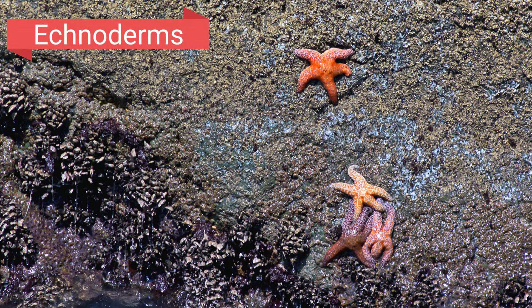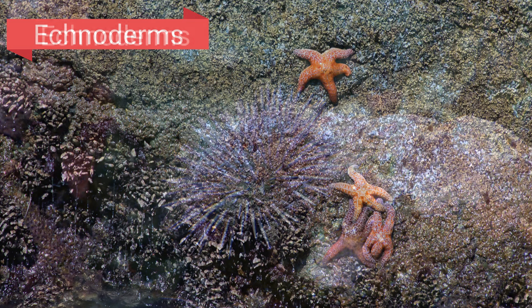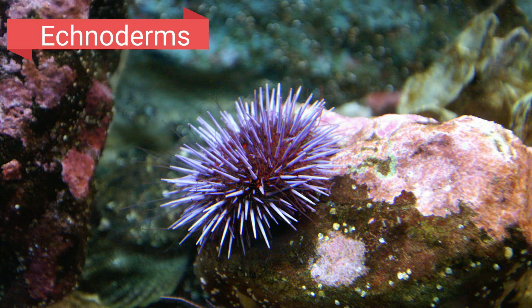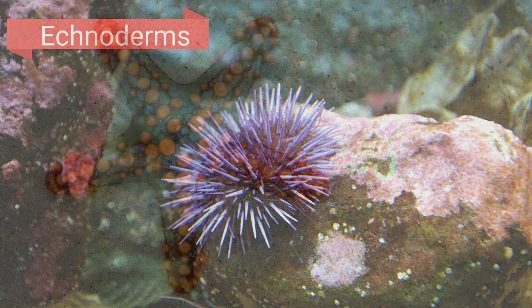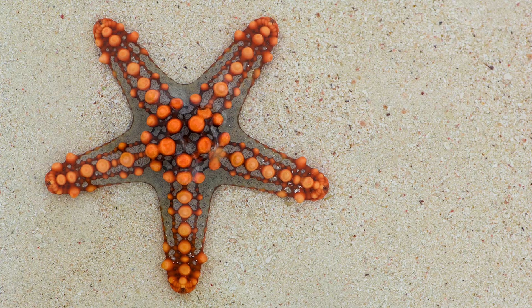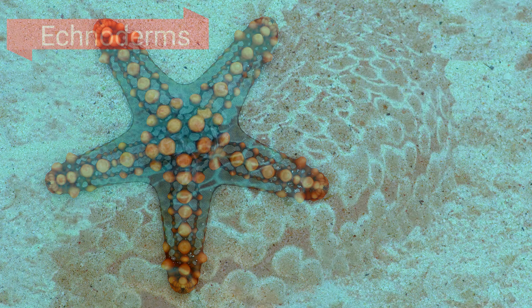Echinoderms. The word echinoderm means spiny skin, and if you take a look at a sea urchin, you will understand why it is included as an echinoderm. It also includes the starfish and the sea cucumber.